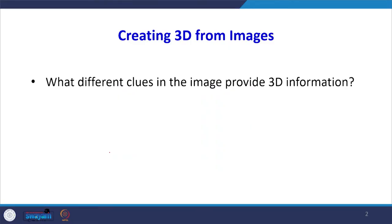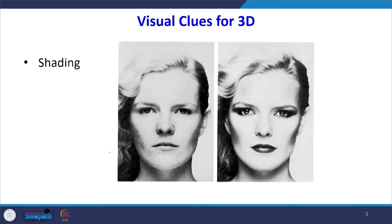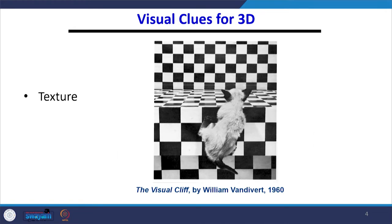When we are creating 3D from 2D images, what different clues in the images provide this 3D information? There are several. One very popular method is shading. If we have a 2D image and we want to show a 3D effect, we apply a shading effect. This is also used in topographical maps — old topographical maps used shading to show which points are higher in an area.